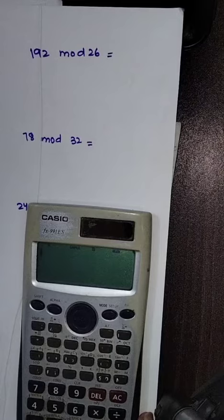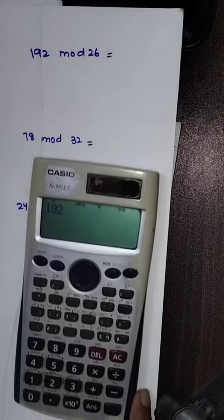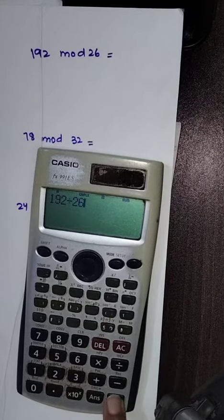To find 192 mod 26, we will divide 192 by 26. The answer is 7.38.